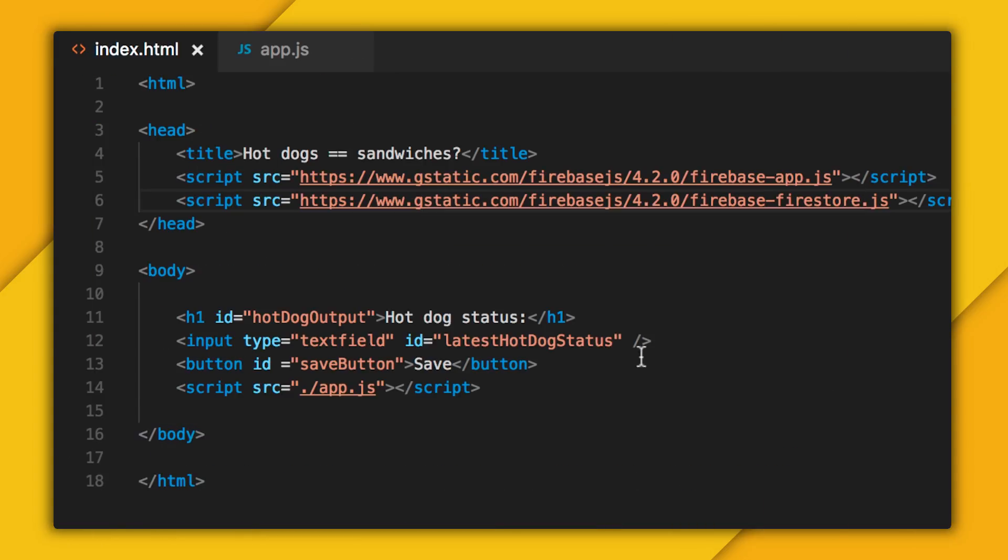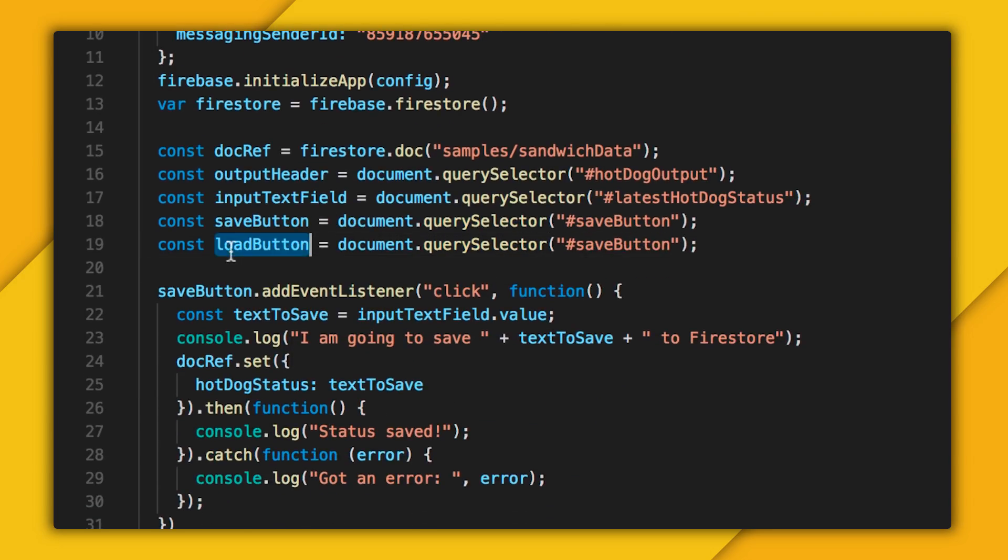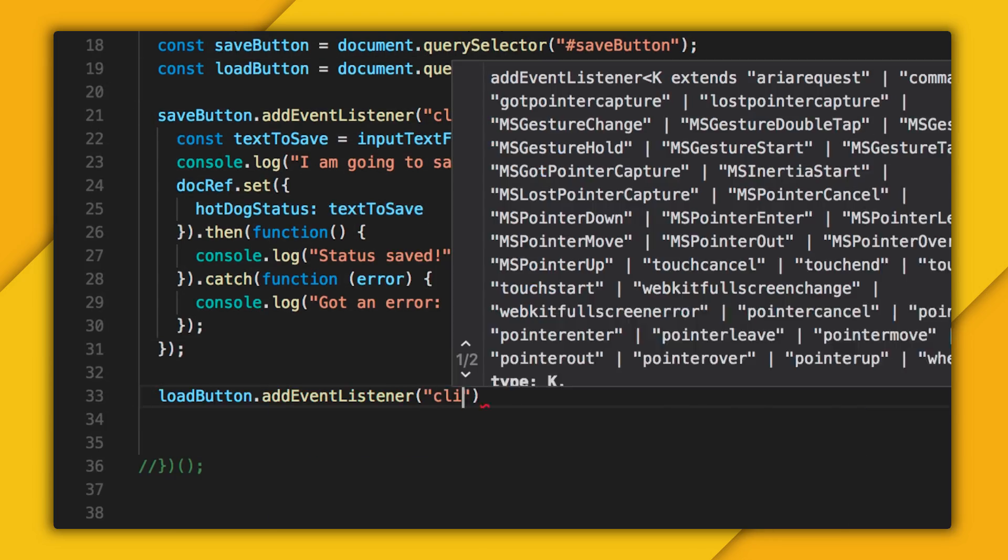So let's create a load button. I'm going to give it an ID tag here. And then in my app.js file, I will save that to a variable. And we will define its event listener.